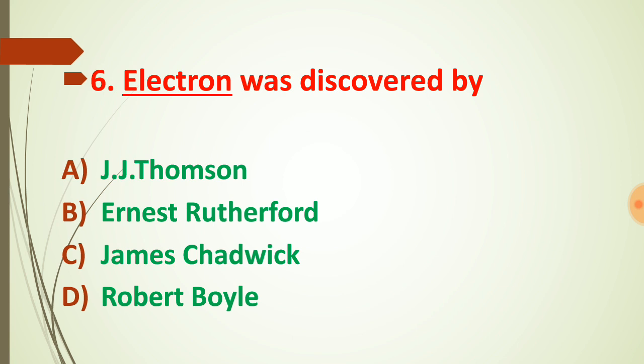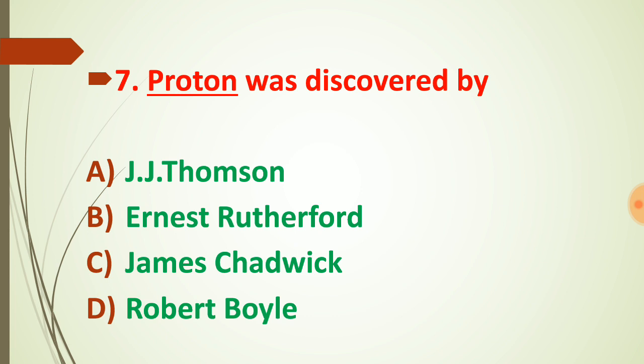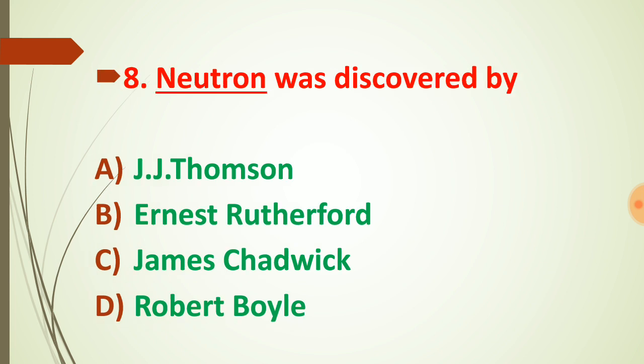Question number six: electrons were discovered by J.J. Thomson — the main credit for the discovery of the electron goes to J.J. Thomson. Question number seven: the main credit for the discovery of the proton goes to Rutherford. Question number eight: neutrons were discovered by James Chadwick.